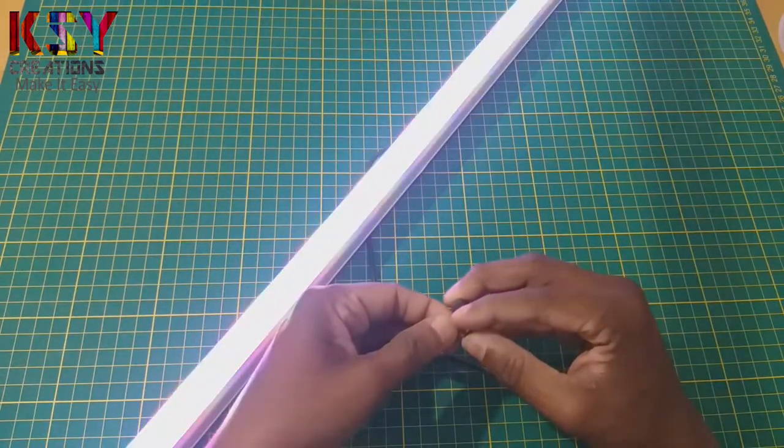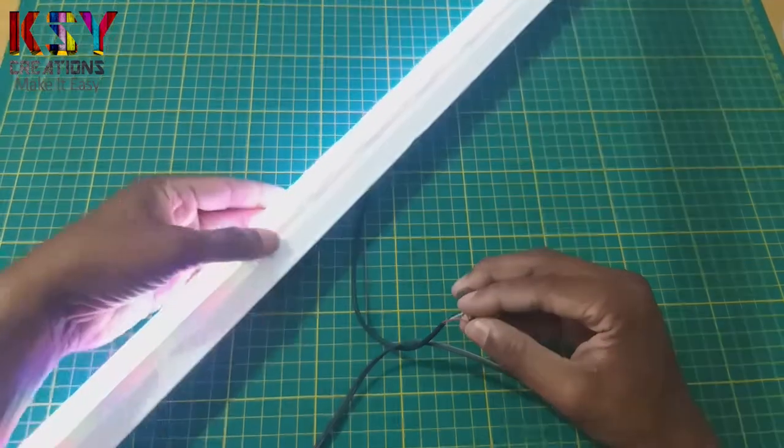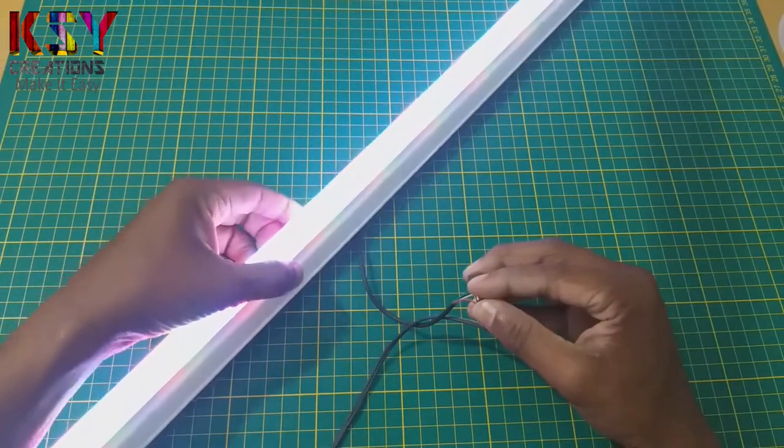Now you can see all lights are glowing here - red, blue, and green. In this way, this tube light has become RGB tube light.